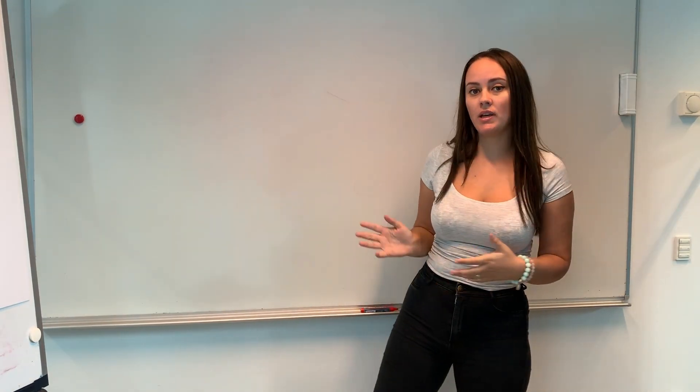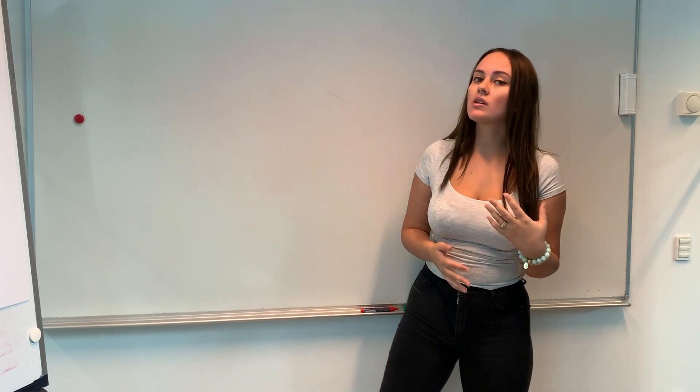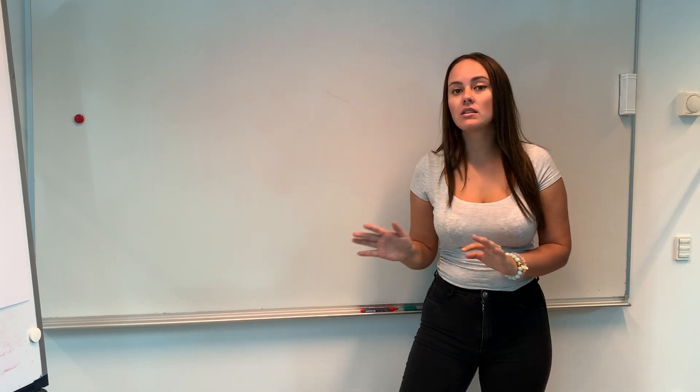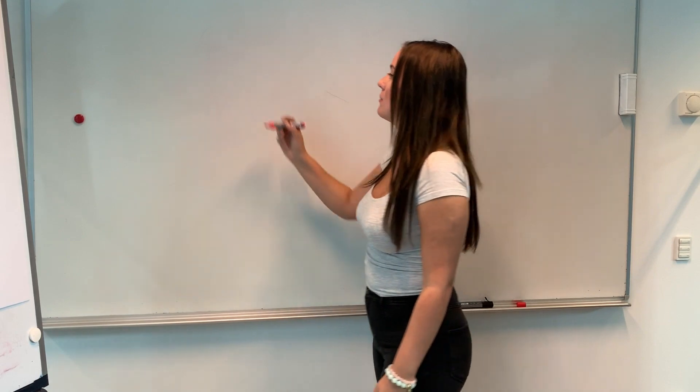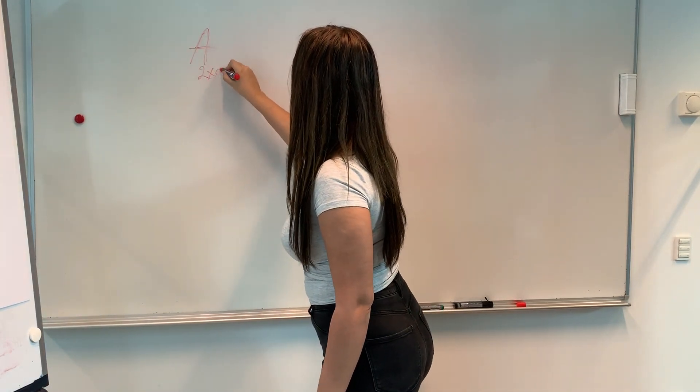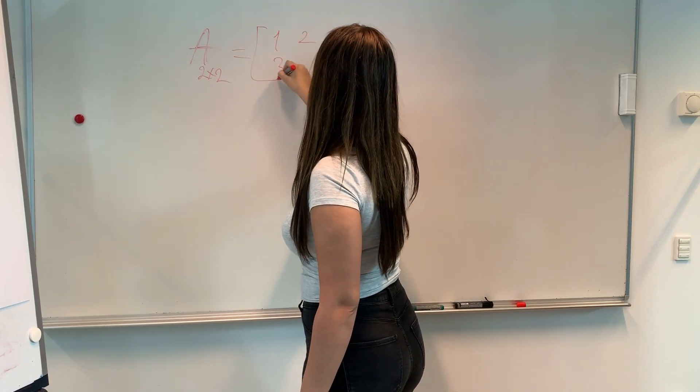And now that we know how to add matrices, let's move on to multiplication. Multiplication is also done quite straightforward, but it's a bit more complicated and it needs a bit of practice. So bear with me. Let's take a matrix A, which is going to be a two by two matrix. It's going to be one, two, three, four.